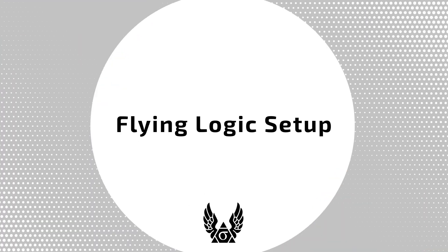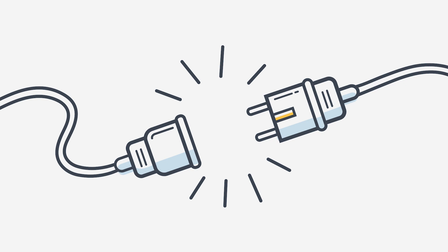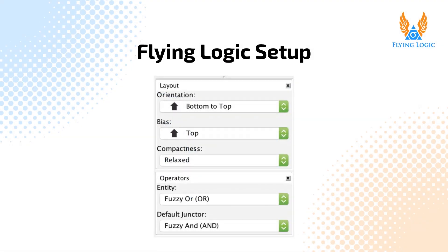Flying Logic Setup. A transition tree is based on sufficient cause thinking, and this is how Flying Logic documents are set up when first created, so you do not need to do anything special with the operator's popup menu to start creating your transition tree. Transition trees flow upwards, with a goal at the top, so you may want to use the orientation popup menu to change the orientation of your document from bottom to top.